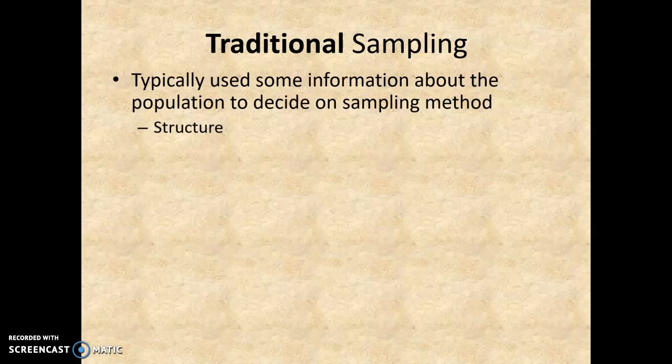You want to know what the population structure is. Structure might be age structure — who's young, who's old — or it might be building structures, like what's a high-rise or what's a bungalow. You might want to know about the distribution: is it random, is it clustered, is it uniformly distributed everywhere? You might want to know detailed things like the range of ages, the depth of a canyon, the elevation, or the height of a tree. These could apply to one thing or all kinds of things, depending on what you're sampling.